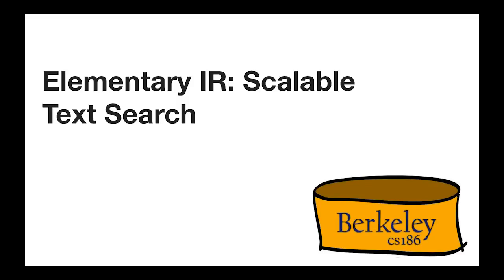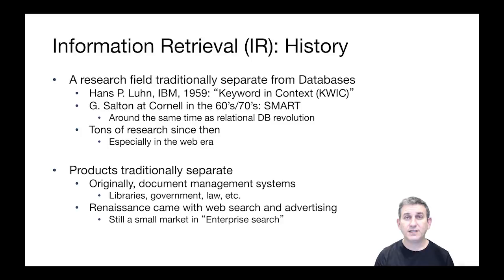A little bit of history on information retrieval. It's a research field that traditionally started out separately from databases, and it goes way back to 1959 when a researcher at IBM named Hans Luhn started a system called Keyword in Context that actually invented many of the techniques we'll learn today.